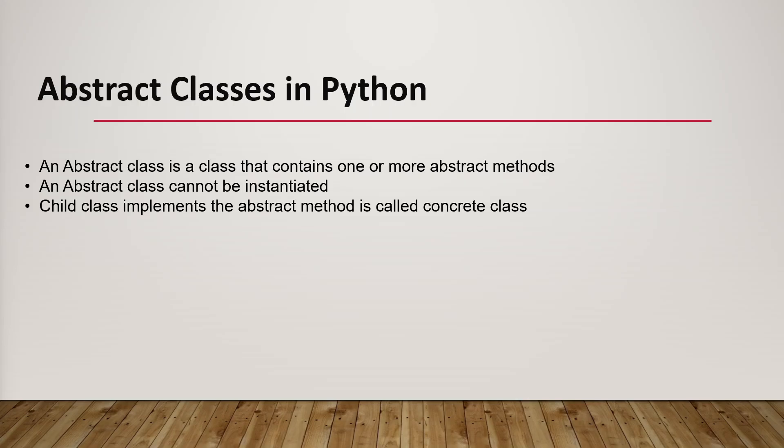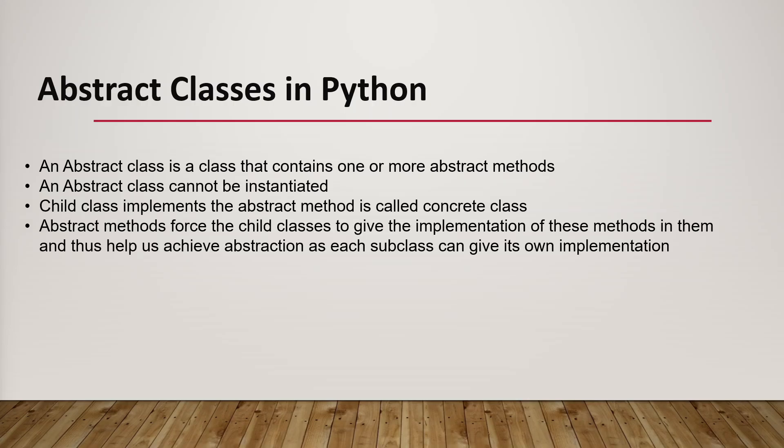The child class which uses the abstract class is known as a concrete class. Abstract methods force the child classes to give the implementation of these methods in them, and thus help to achieve abstraction as each subclass can give its own implementation. You can create the method based on your parent class and add whatever functionality you need in your child classes.